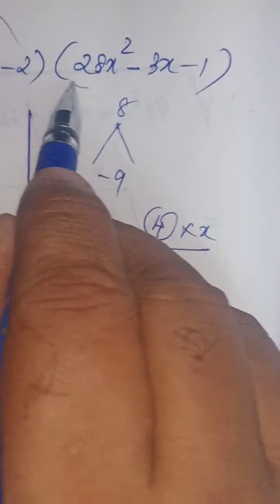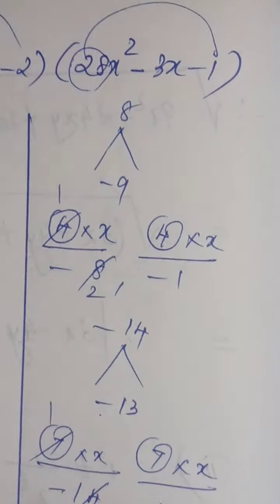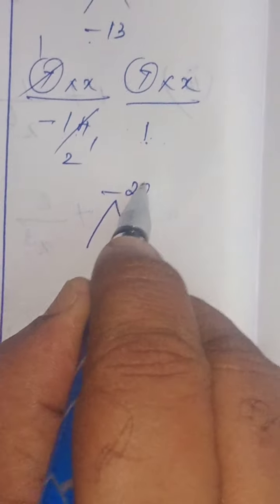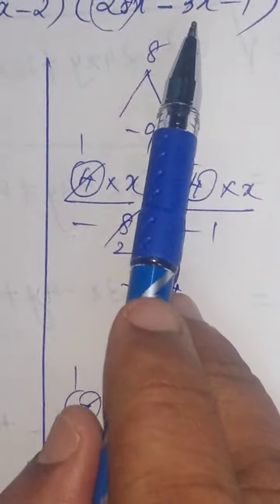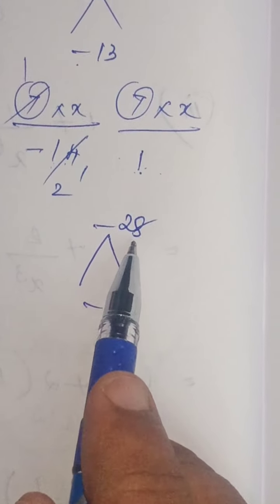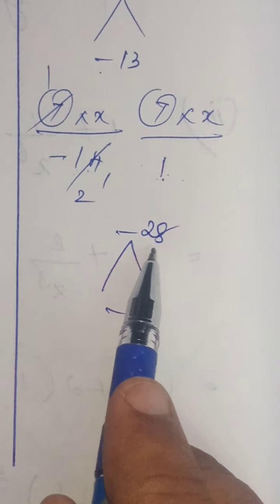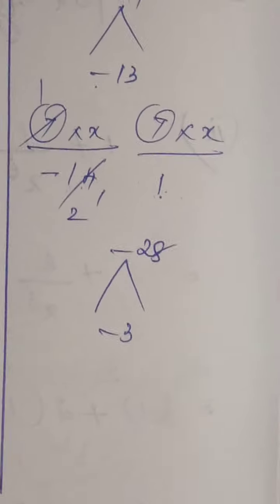Finally, 28 into minus 1, minus 28. And, the coefficient of x equals minus 3. For getting 28 in multiplication table we have 28, 1s are 28.